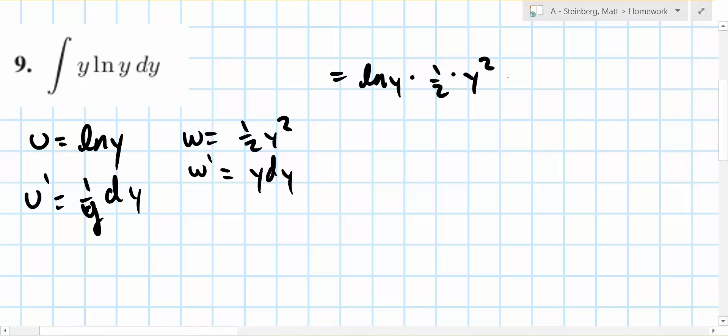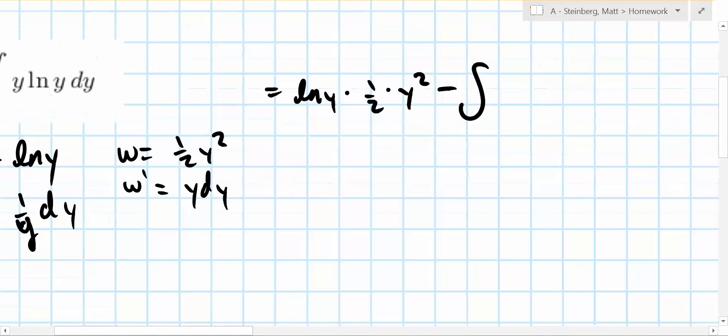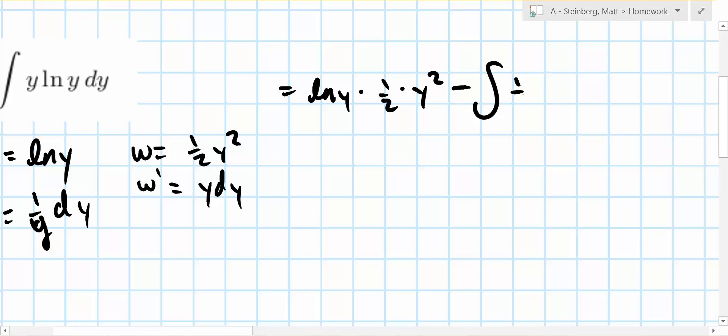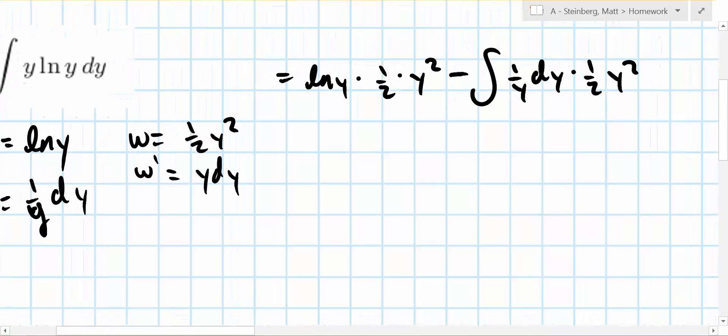Then minus the integral of u' times w. So that's 1 over y dy times 1 half y squared. And this all simplifies quite a bit.